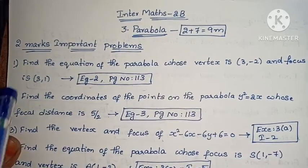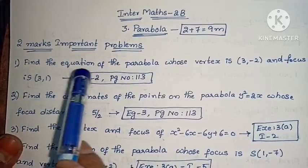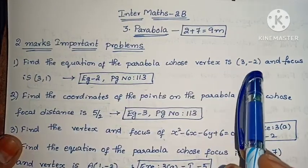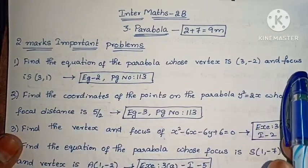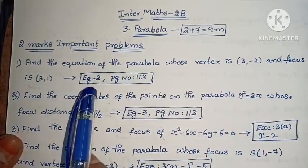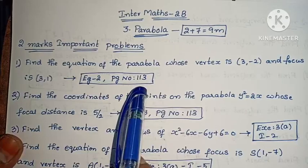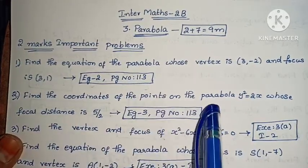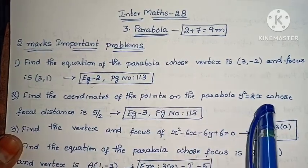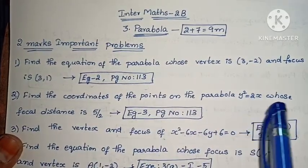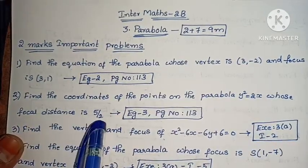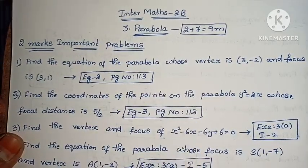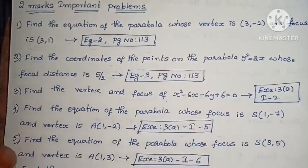Now let's start the first one. Find the equation of the Parabola whose vertex is (3, -2) and focus is (3, 1). Example 2, page number 113. Next, find the coordinates of the points on the Parabola y² = 2x whose focal distance is 5/2. Example 3, page number 113.